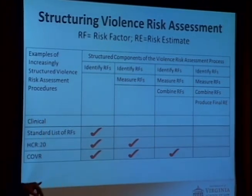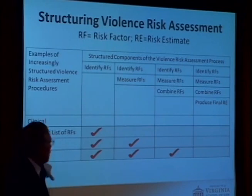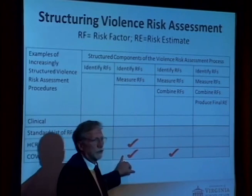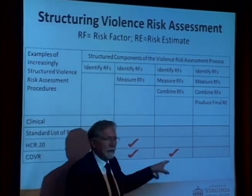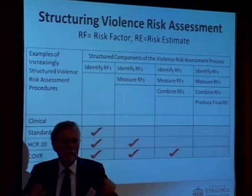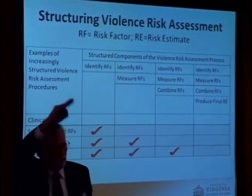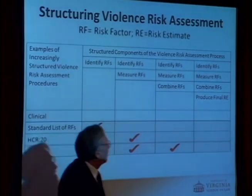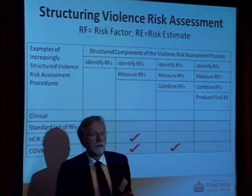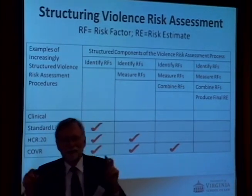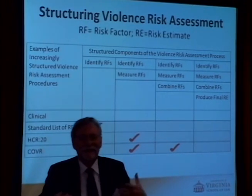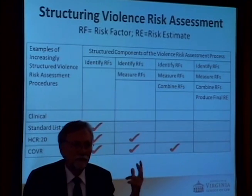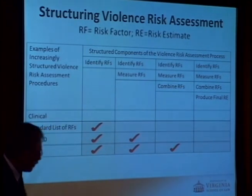The Classification of Violence Risk is computerized software that identifies risk factors, tells you how to measure them, and combines them in a tree-type design — if you're high on one risk factor it asks further questions, if low it asks different ones. The view here is that humans — clinicians — should be able to override the result if they have good reason to. You shouldn't just go with the numbers.